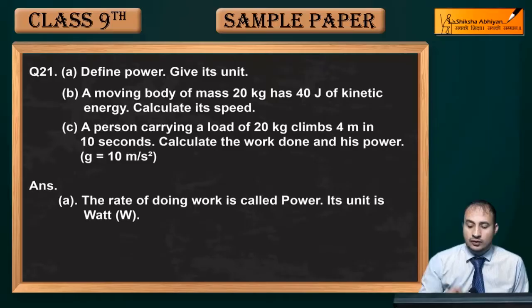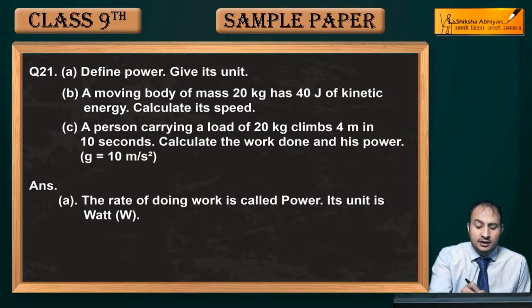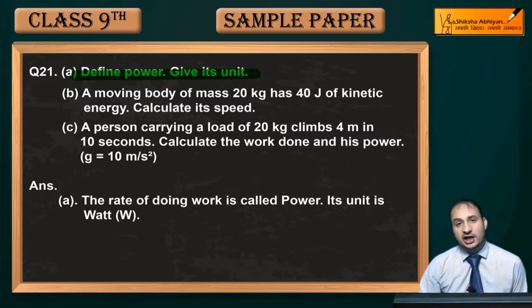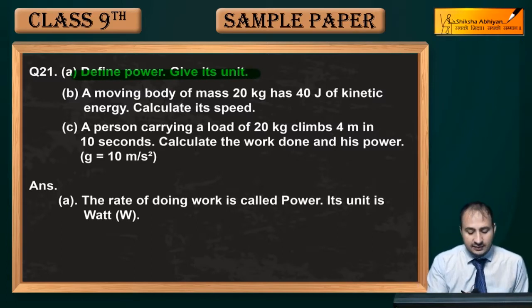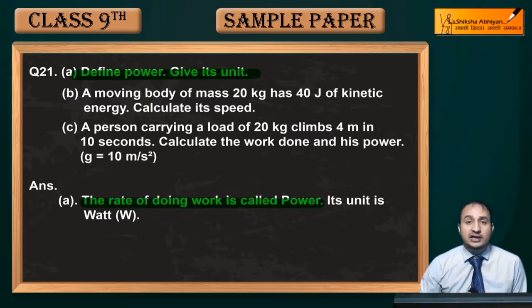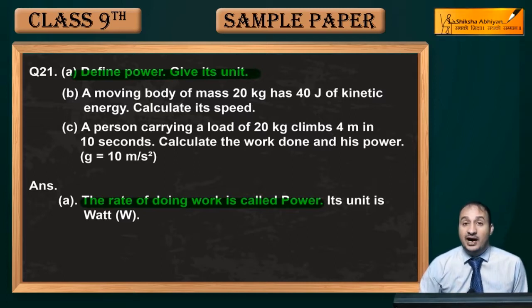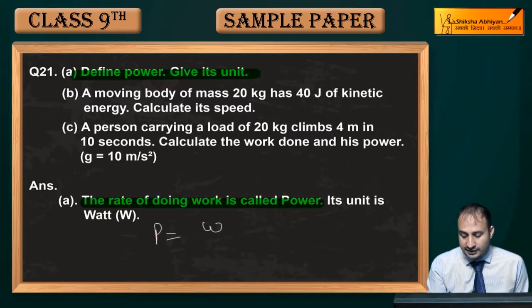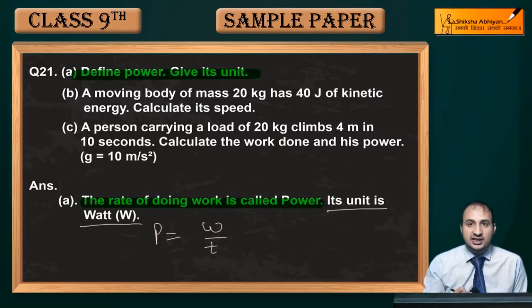Question 21: Define power and give its unit. Power is nothing but the rate of doing work — work karne ke rate ko hi power kehte hain. Power is W upon T (work divided by time). Its SI unit is Watt, which is Joule per second.